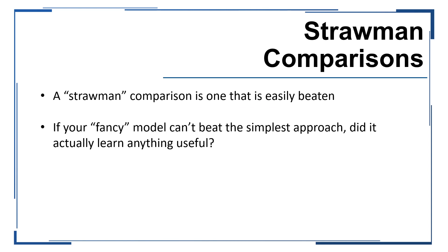A strawman comparison is one that is easily beaten. And from a prediction modeling perspective, even though strawman models are simple, they actually do perform reasonably well considering how simple the approach is. It really also puts into perspective how well your machine learning method is performing on top of this. So if you are training a machine learning model to predict some dependent variable of interest, it should be able to outperform simpler approaches — otherwise, it raises the question as to whether or not this was really worth the effort.